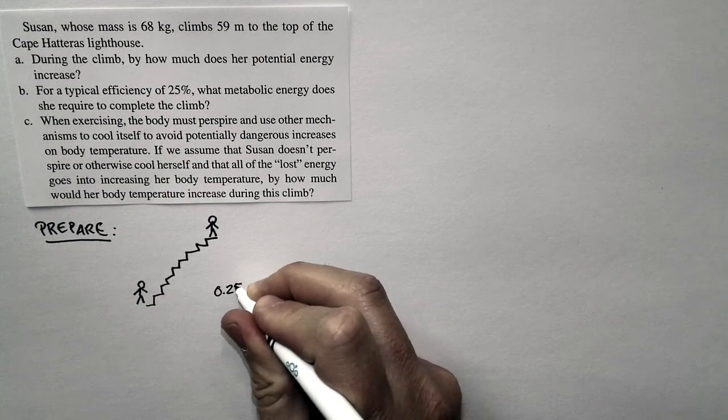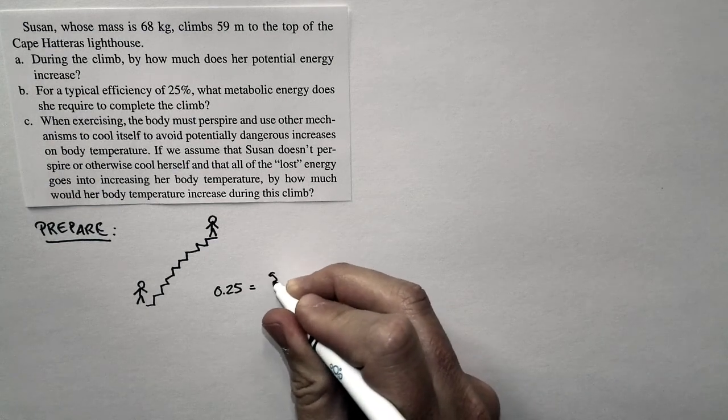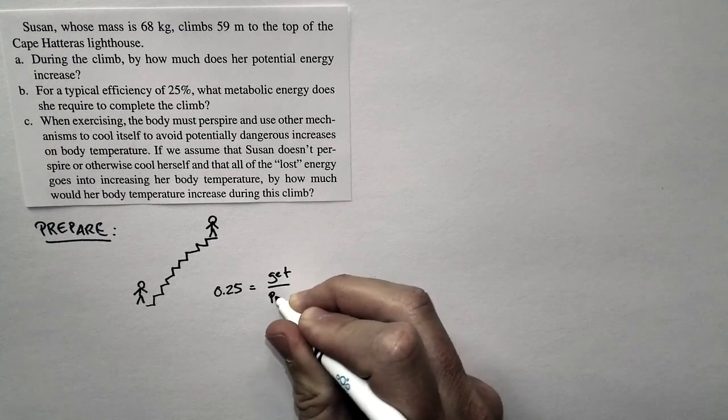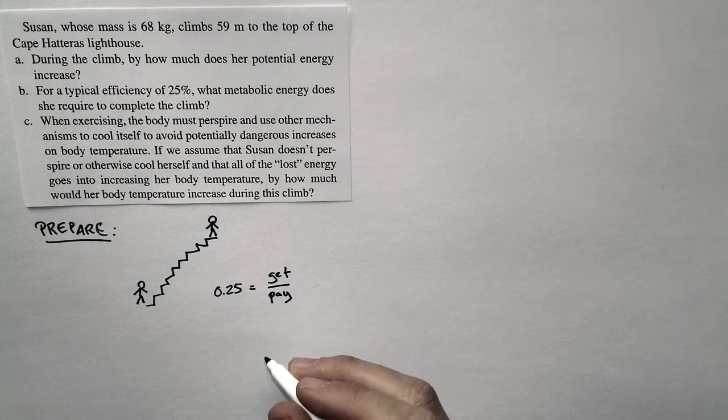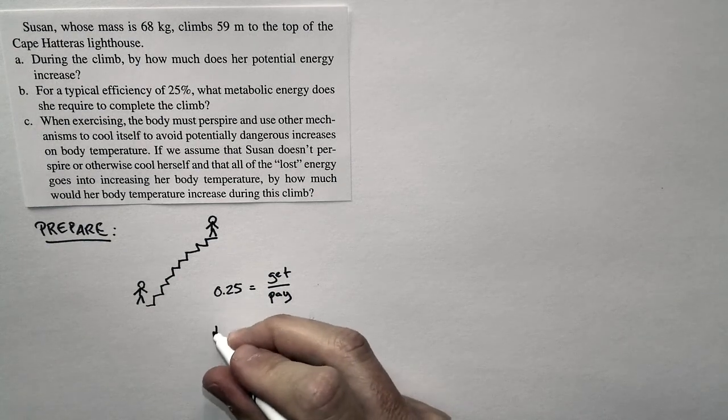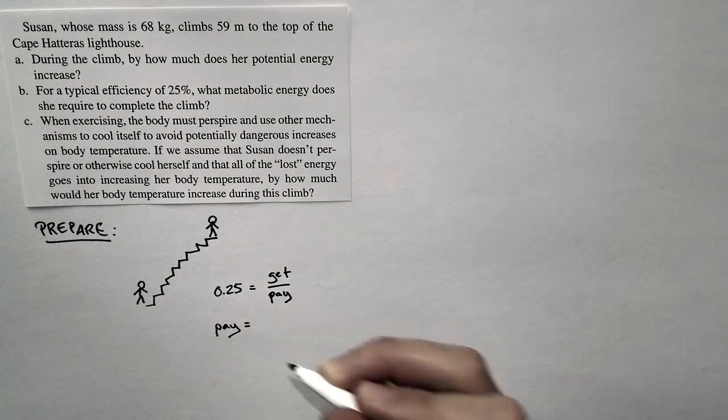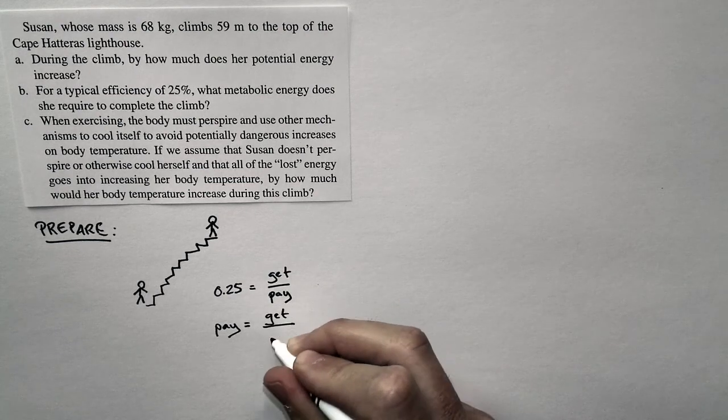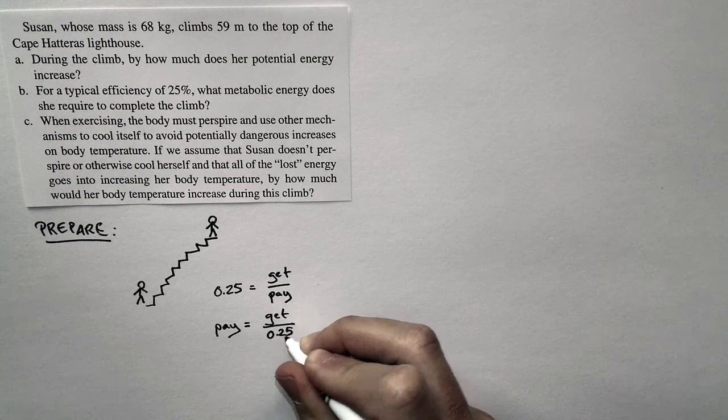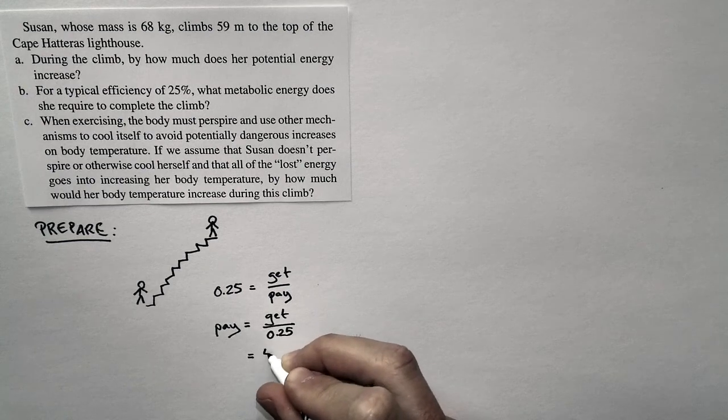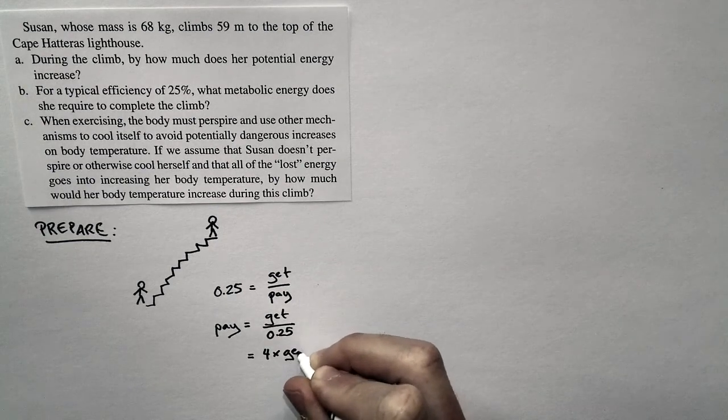Remember, efficiency in this case, 0.25, is what you get divided by what you had to pay. What she has to pay, that is the metabolic energy, is equal to what she gets, the change in potential energy, divided by 0.25, or four times what she gets.